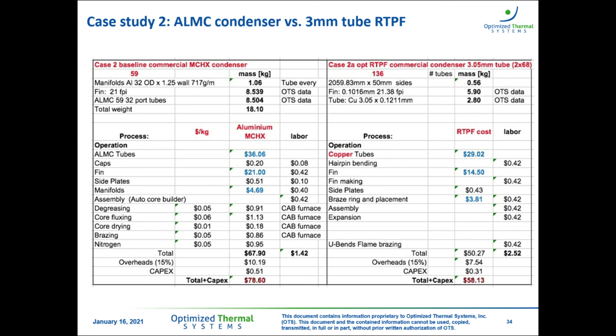The 3 mm copper tube heat exchanger has 0.56 kg sides, 5.9 kg fins, and 2.8 kg tube mass. Main cost contributors are copper tubes at $21.02, fins at $14.50, and braze rings at $3.81. The total for the 3 mm tube heat exchanger is $58.13. This concludes the cost analysis and comparison section.